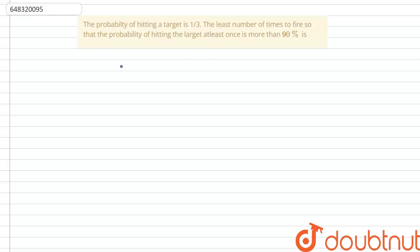Now we need to find the value of the number of tries. The probability of hitting is given to me as 1 by 3. Therefore, the probability of not hitting would be 1 minus 1 by 3, that is 2 by 3.